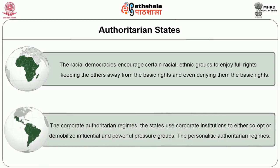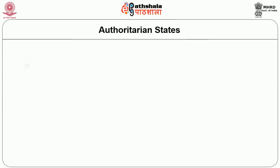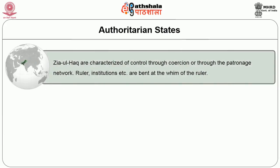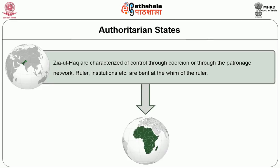In Latin America, corporate authoritarian regimes use corporate institutions to either co-opt or demobilize influential and powerful pressure groups. The personality authoritarian regime, as in Pakistan under General Zia ul-Haq, is characterized by control through coalition or patronage networks. Ruler institutions are bent at the whim of the ruler — the same is found in Africa in great variety.